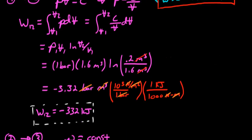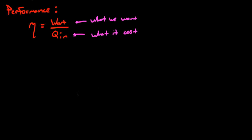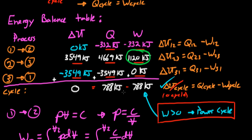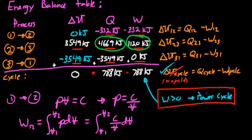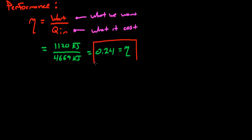The last thing we want to do is evaluate the performance of our cycle. For a power cycle, we use efficiency eta, which equals what we want divided by what it costs us — the work out over the heat in. You have to be careful: these are not net values for the whole cycle. Looking at the table, the positive work out is 1120 kilojoules, and the positive heat in is 4669 kilojoules. So efficiency equals 1120 divided by 4669, which gives 0.24. That means about a quarter of the energy that went into the cycle as heat came back out as work, and the rest was wasted.